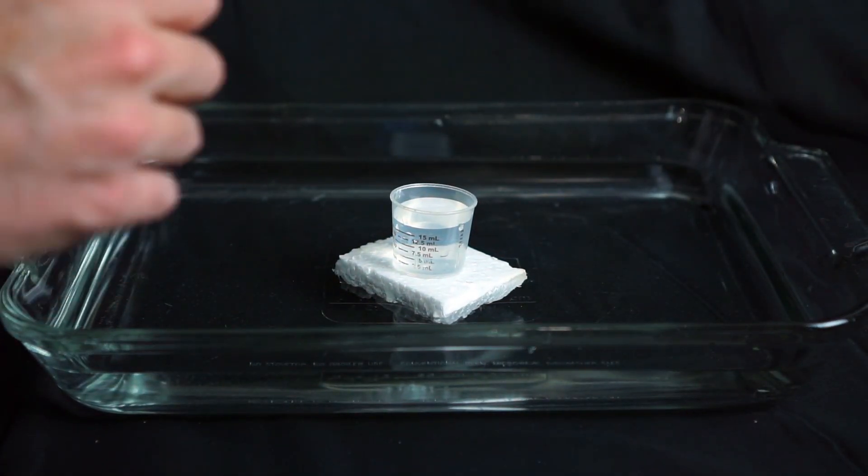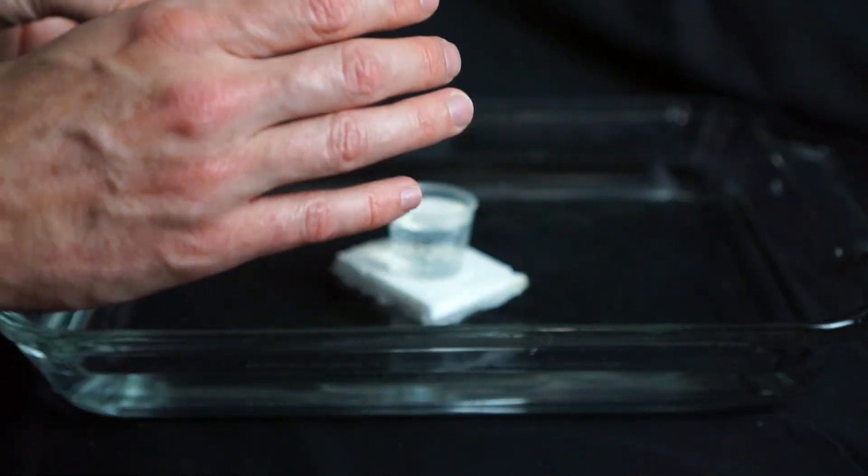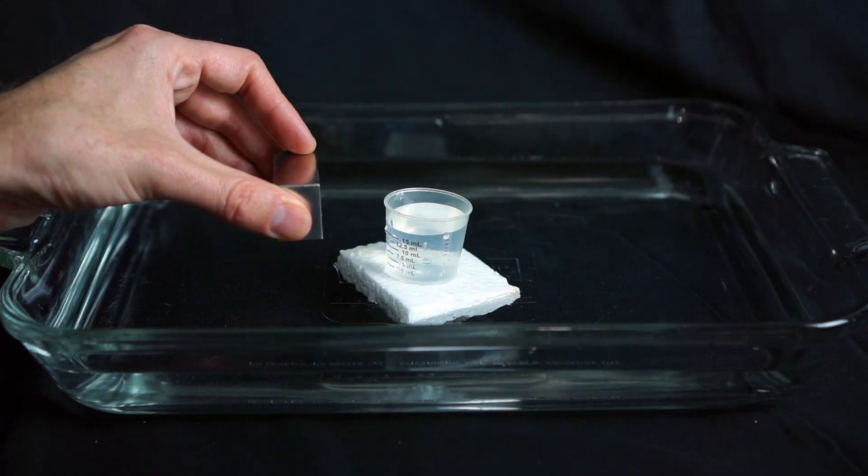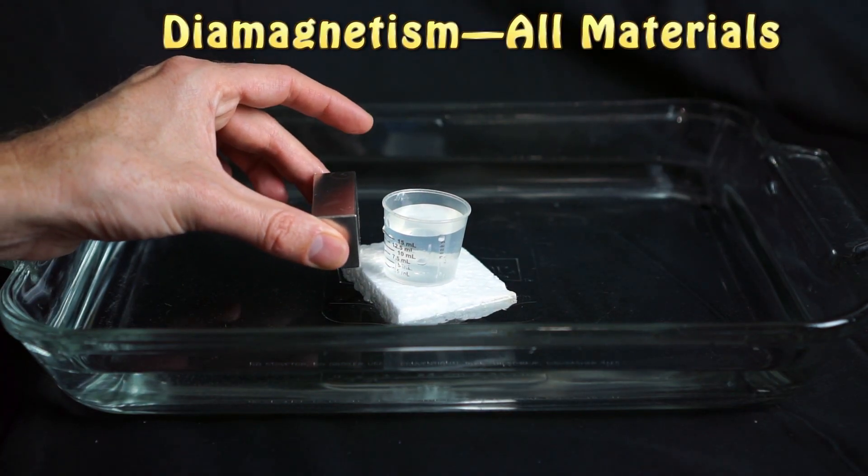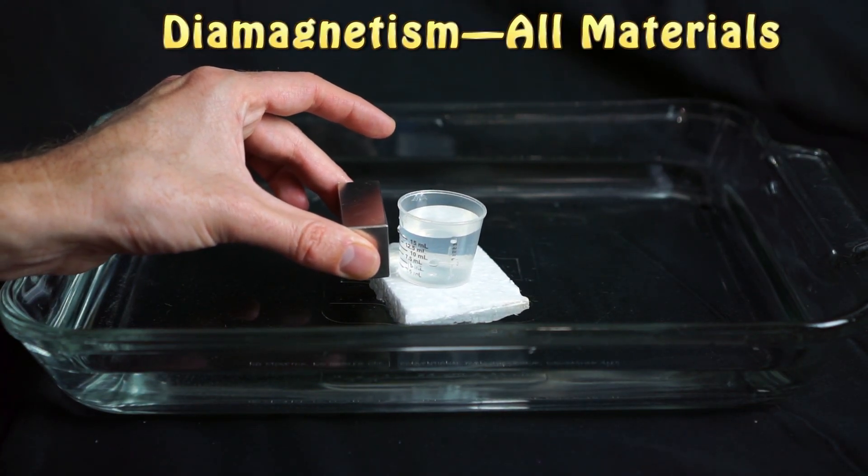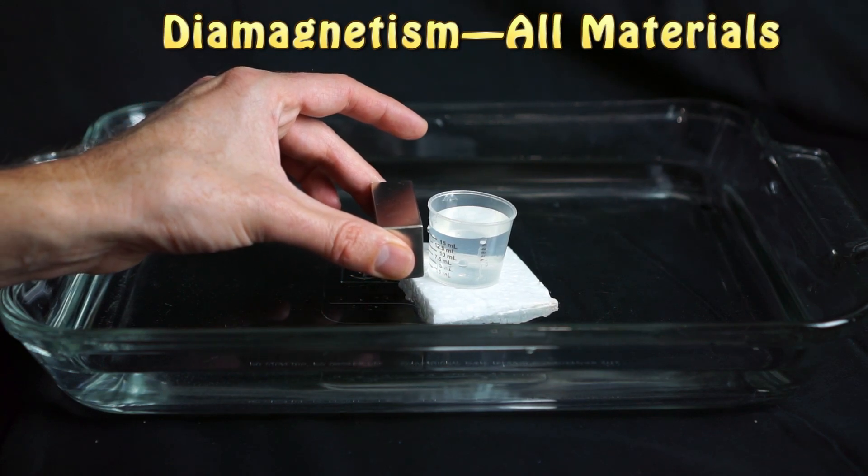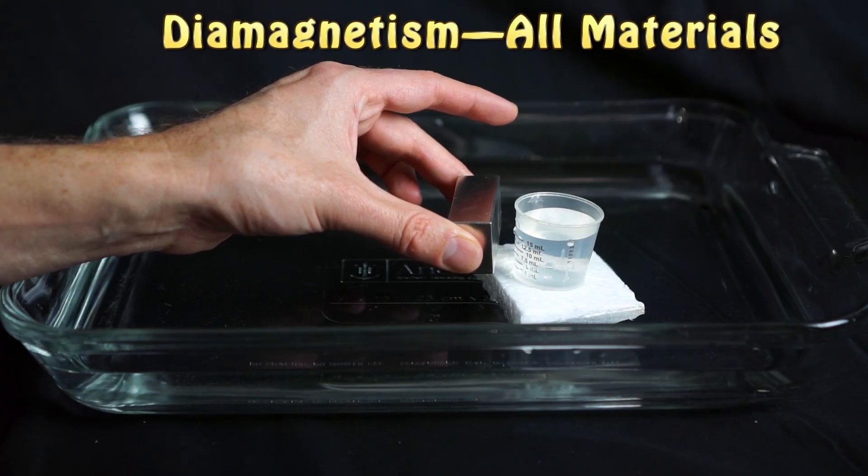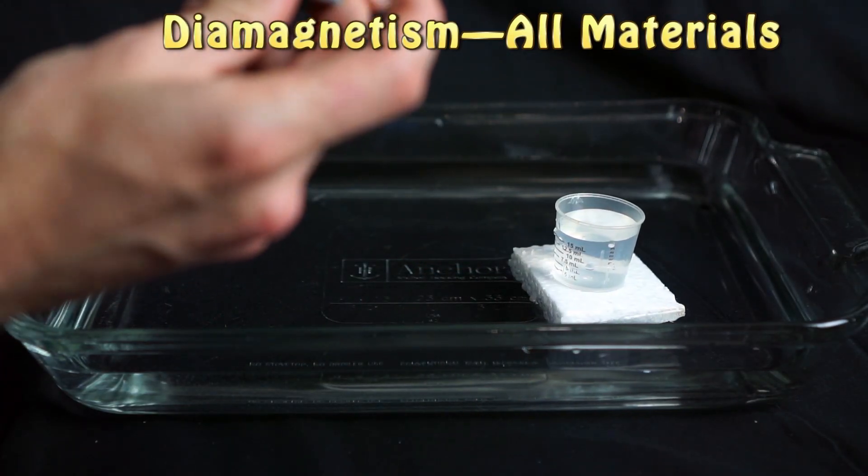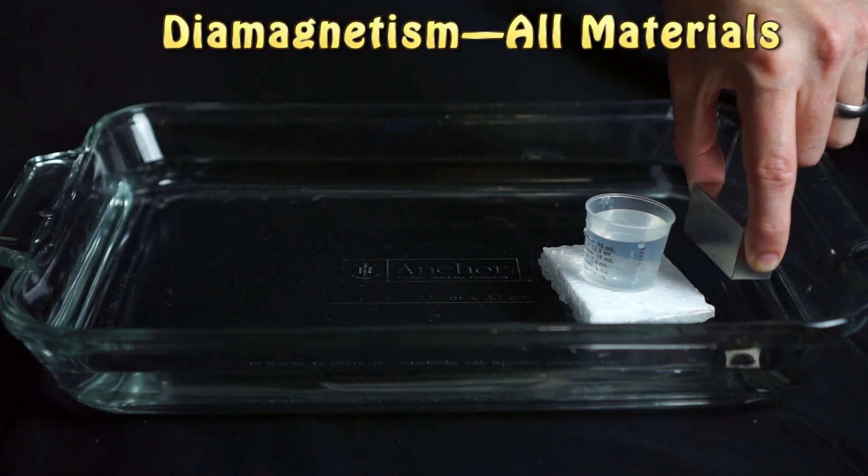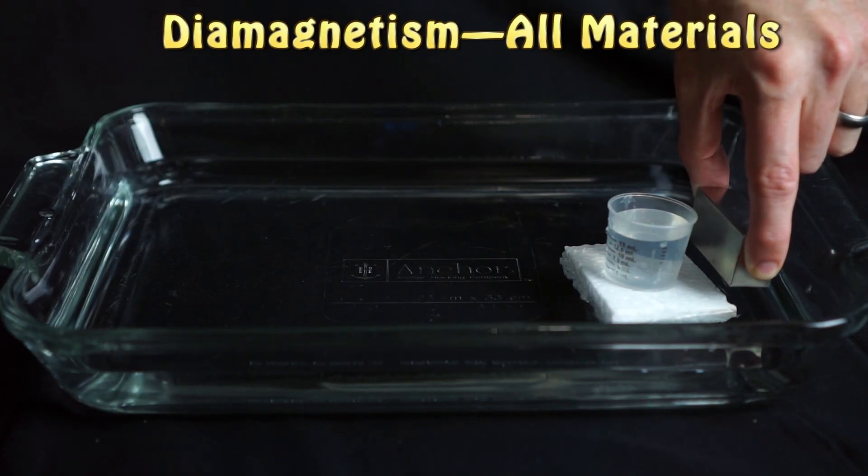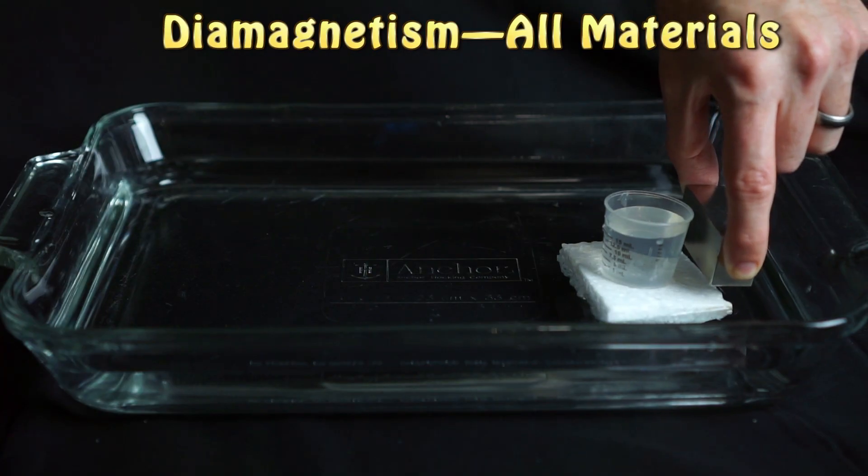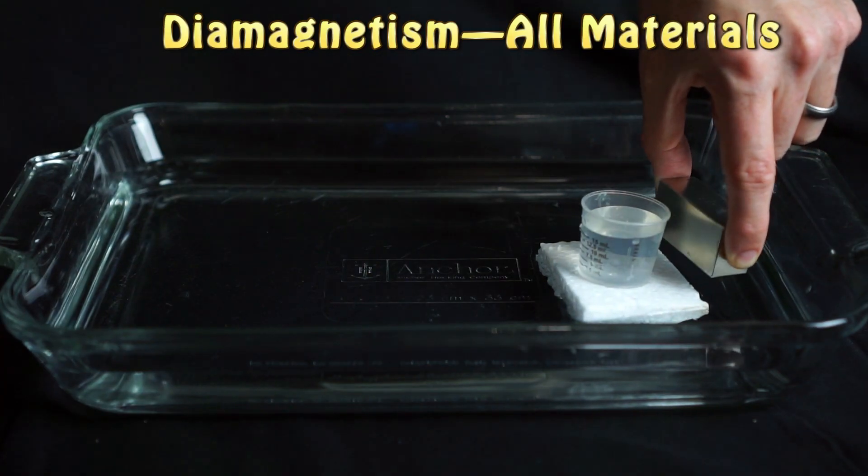So I just have my water cup floating in water so it doesn't have any friction. And I'm going to show you how when I bring my strong magnet near it, it will repel it. See how it's pushing it away? I can even make it stop, go the other way. I'm not touching it. I'm just holding the magnet near it.